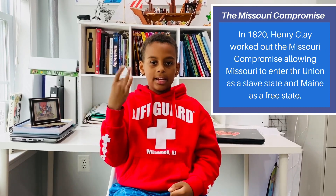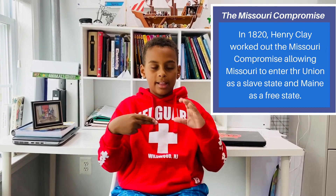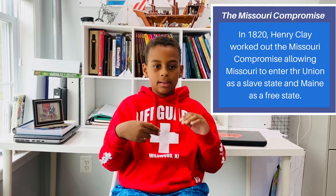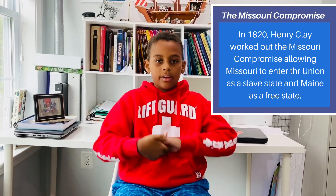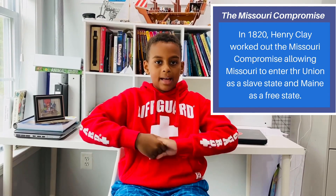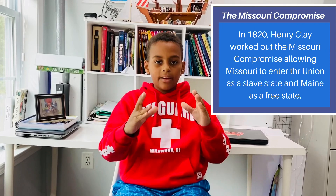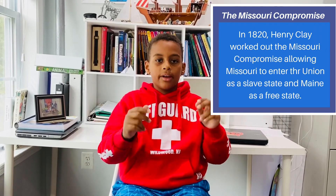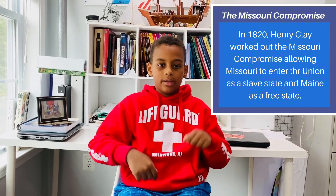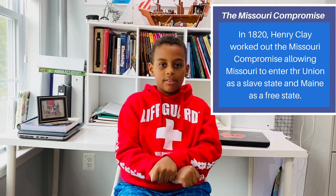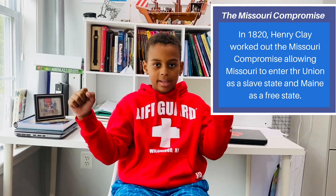In 1820, Henry Clay worked out the Missouri Compromise, allowing Missouri to enter the Union as a slave state and Maine as a free state.